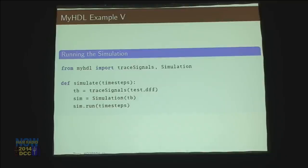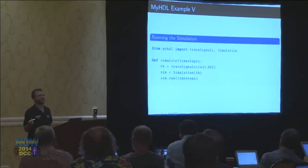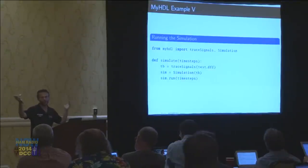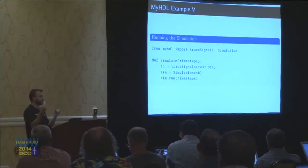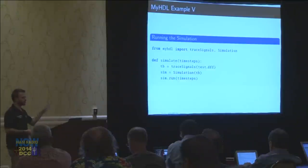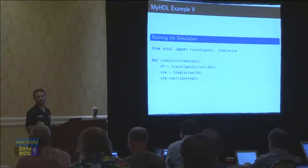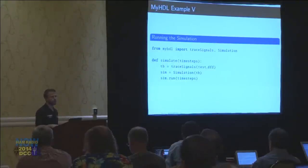When I want to run the simulation, this is like the simulation function. It says time_steps is how many nanoseconds should I run this simulation for. Then I pass in — I want to trace the signal. We're going to look at the trace signals in a little bit to see the output. I'm going to trace everything that goes on in that D flip-flop function. And then we create the simulation with that test bench and run it for that many time steps. It'll drop out a VCD file that has all the details of what happened. And we can view it with a waveform viewer.